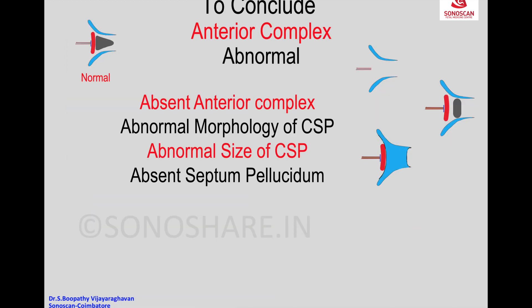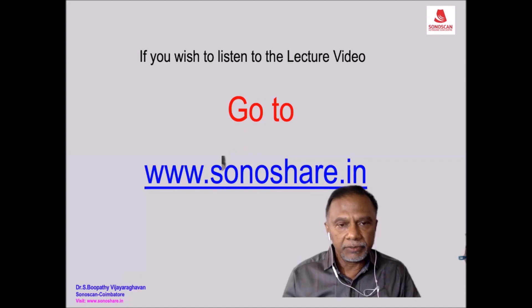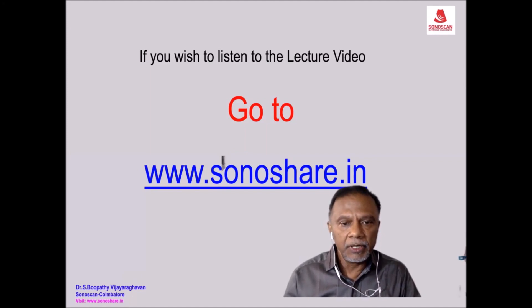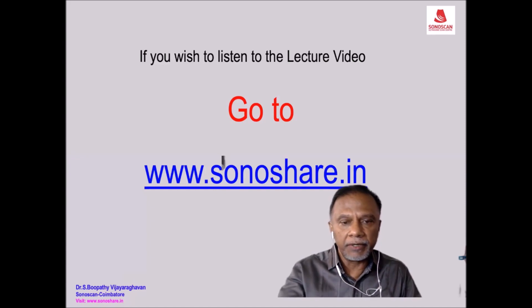When you see it giving a dysmorphic appearance — which is the frontal horns — the concavity is inward. Then, absence of two septum pellucidum giving a single frontal horn. Having gone through the preview, if you wish to listen to the main lecture video, go to sonoshare.in.